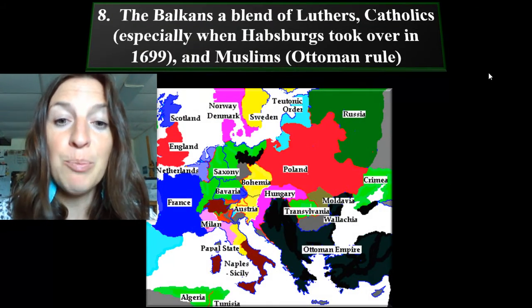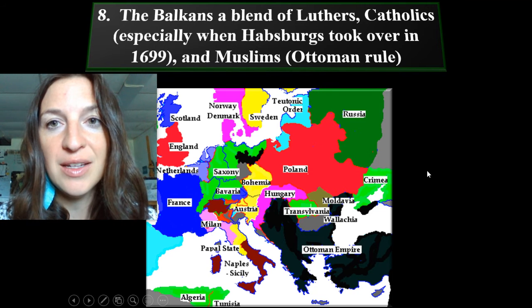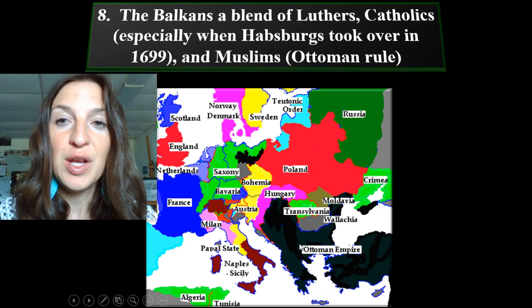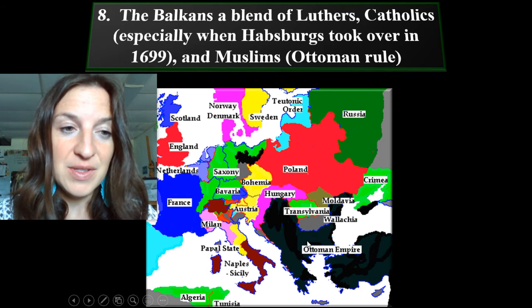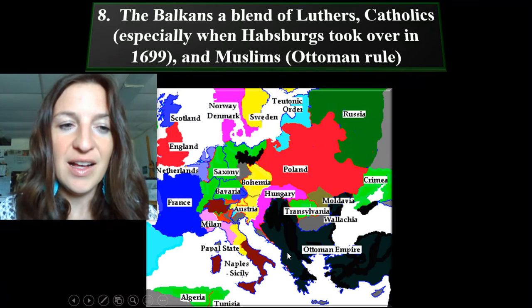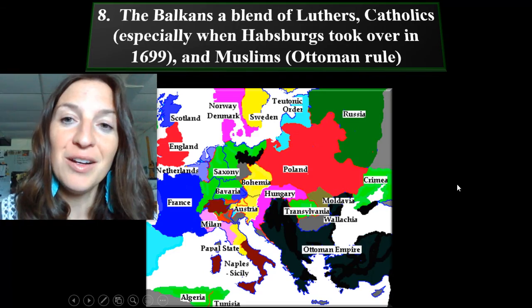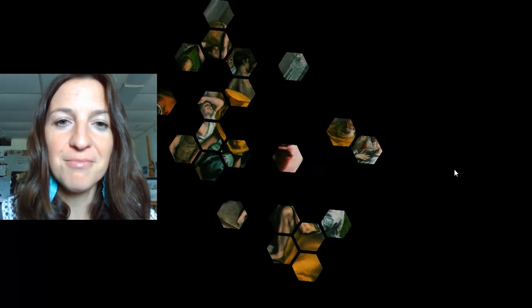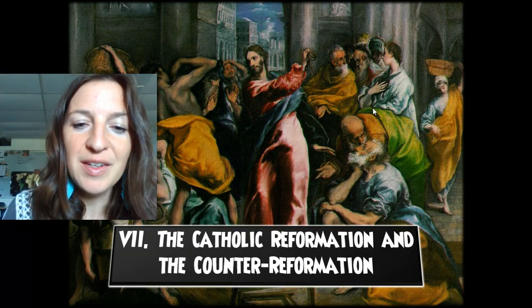Number eight: the Balkans, which are going to be a powder keg for World War I, end up being a blend of Lutherans, Catholics, and Muslims, and there's going to be some conflict there with those groups. Roman numeral seven: Catholicism.